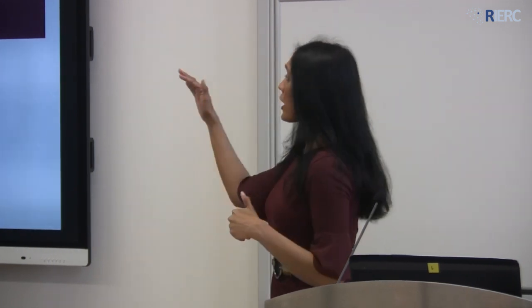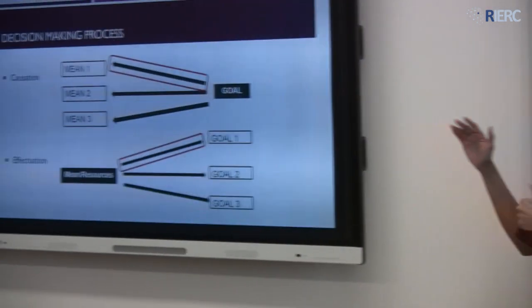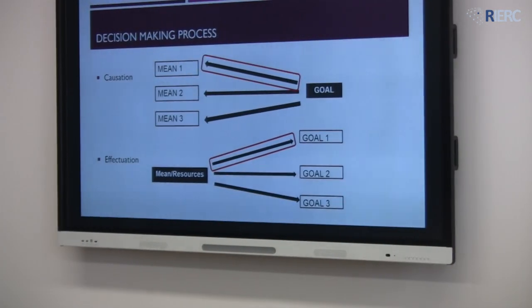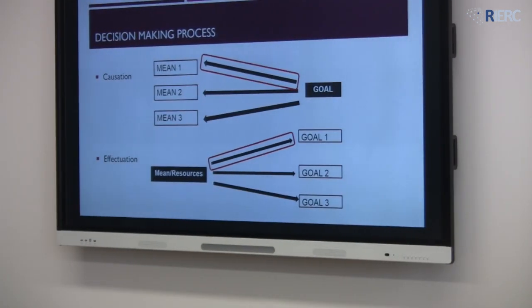Let me now very briefly explain the conceptualization of decision-making approaches. Borrowing from the entrepreneurship literature, we look at two types of decision-making approaches: causation and effectuation.